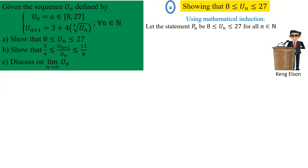From the statement, we begin with the base case. The base case is like an initial step — if it is true for the very first value of n, you can proceed. If it is false for the very first value of n, then it is false for all values of n. We take the base case at n = 0.